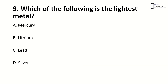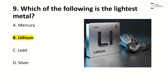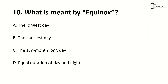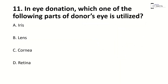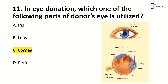Which of the following is the lightest metal? Right answer is B, lithium. What is meant by equinox? Right answer is D, equal duration of day and night. In eye donation, which part of the donor's eye is utilized? Right answer is C, cornea. The cornea is this part of the eye — remember it.